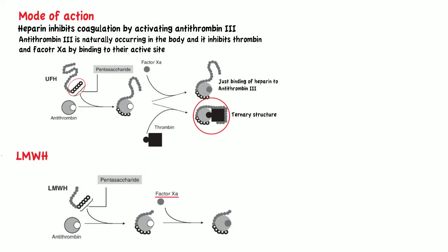To be clear, unfractionated heparin leads to the inhibition of both factor Xa and thrombin, while low molecular weight heparins inhibit only factor Xa.